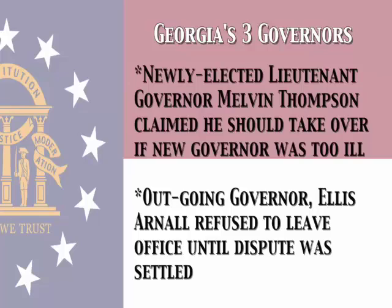The second individual was Melvin Thompson, who was the newly elected lieutenant governor. Melvin Thompson argued that the role of the lieutenant governor was to fill in if the governor could not fulfill his duties, so he also argued that he was the rightful governor. The third individual was the outgoing governor, Ellis Arnold, who refused to leave office until the governor debacle was corrected.